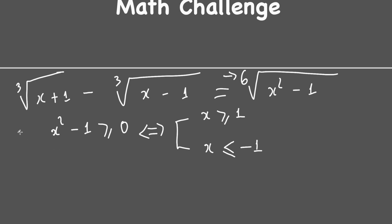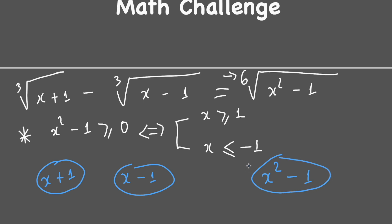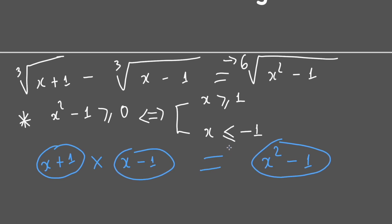That is the condition. Next, you can see on the left side we have x plus one and x minus one, and on the right side we have x squared minus one. We temporarily remove the radical and observe that the product of the left side expressions equals the right side expression.